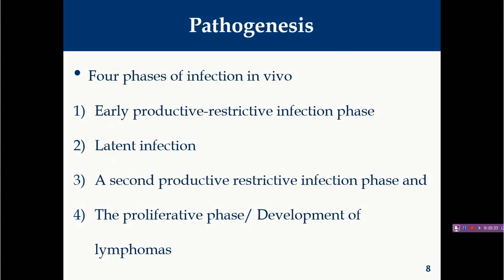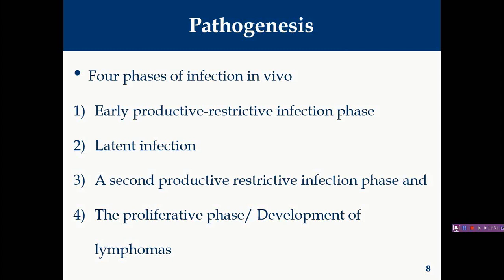Pathogenesis, for easy understanding, is divided into four phases. Phase 1 is the early productive restrictive infection phase. Phase 2 is the latent infection phase. Phase 3 is the second productive restrictive infection phase. Phase 4 is the proliferative phase — development of lymphoma. The actual outcome depends on strain virulence; very virulent plus strains may cause rapid death or lymphoma before completing all phases.